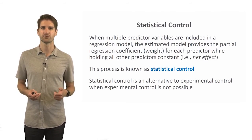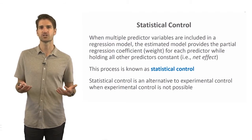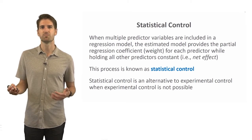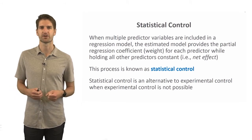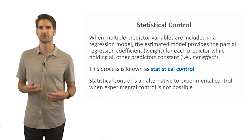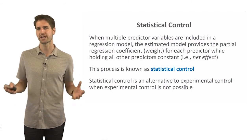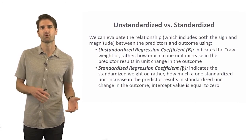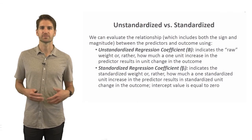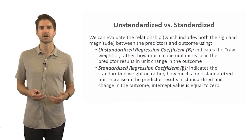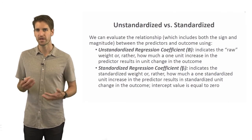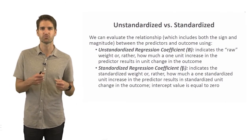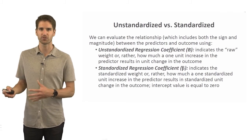For that reason, statistical control is sometimes the next best thing. For example, if you wanted to know the relationship between age and performance on an organizational assessment, you might control for gender as a separate variable in the model to partial out the effects of gender in predicting those scores. Just as with simple linear regression, we can use both unstandardized or standardized regression coefficients. Unstandardized regression coefficients are generally recommended as they keep the variables and interpretation in their original scale.